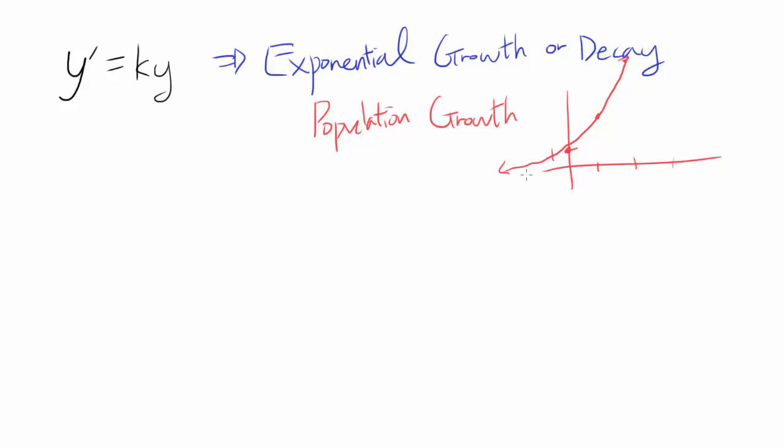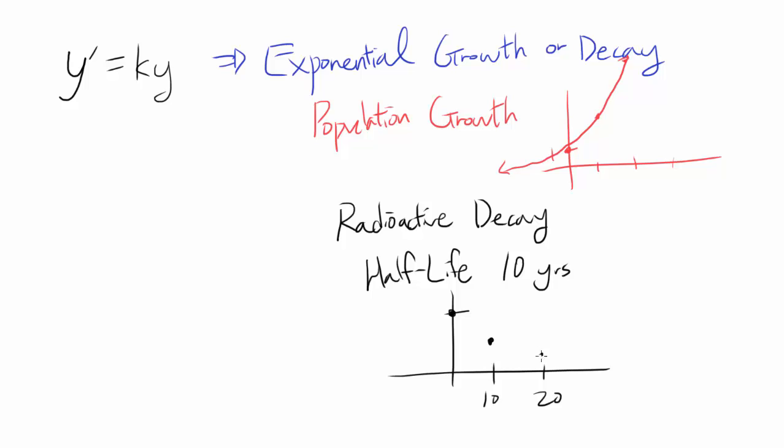You can also have radioactive decay. If you have a radioactive isotope with a half-life of, let's say, 10 years, what's going on? You start with some amount of isotope. After 10 years, you only have half of it left. After 20 years, you have half of the half left. After 30 years, you have another half, and so on. In this case, it's exponential decay.